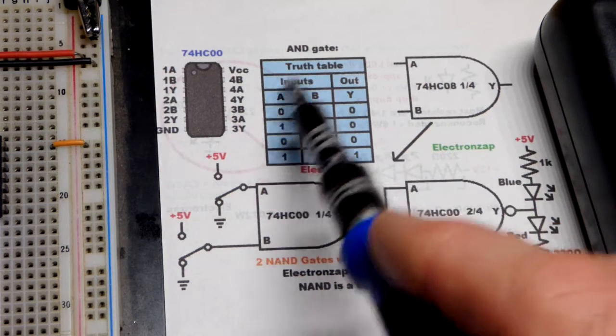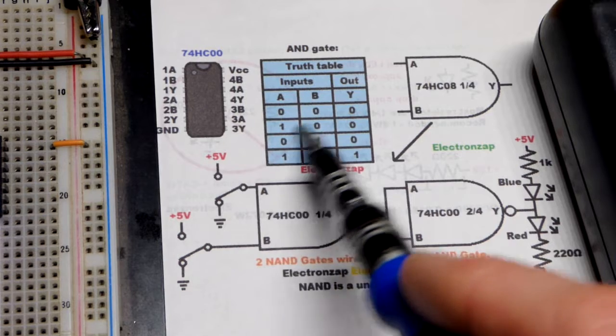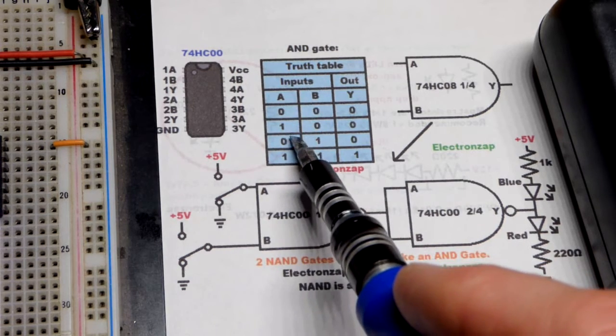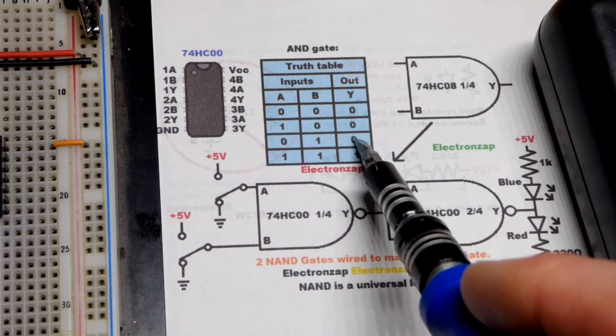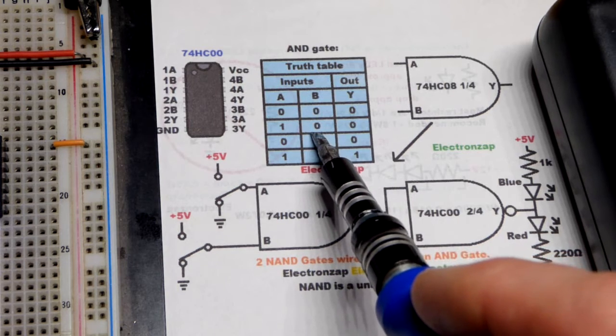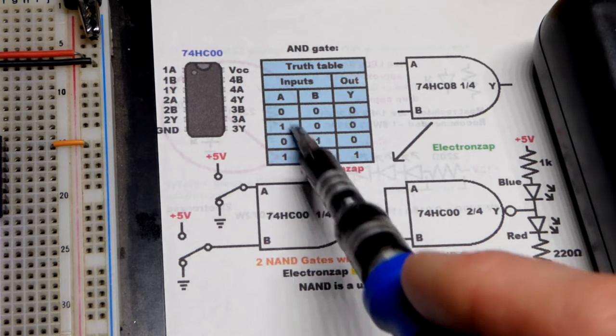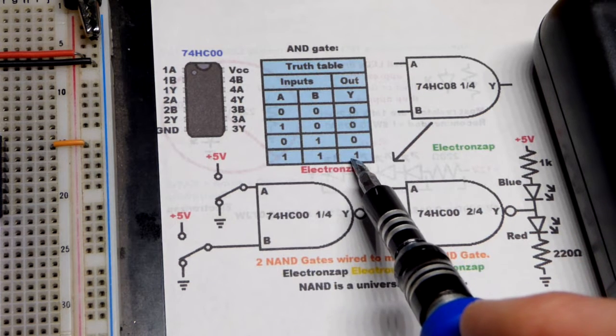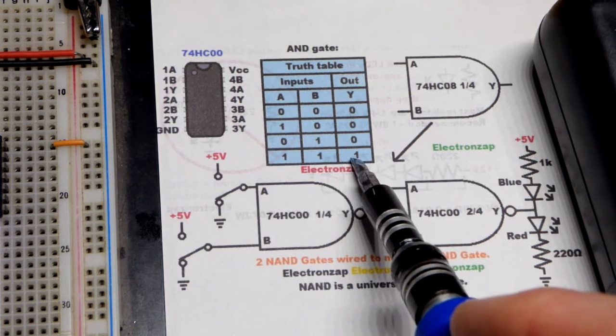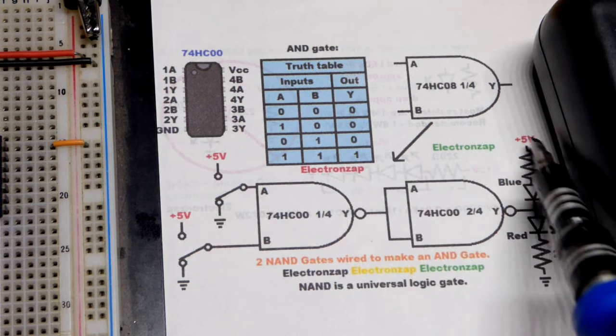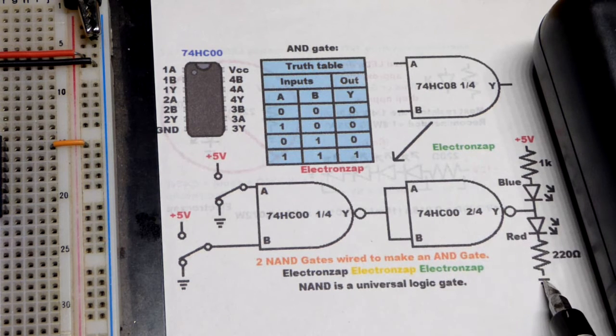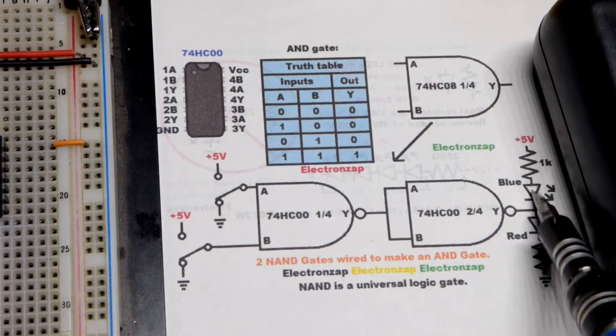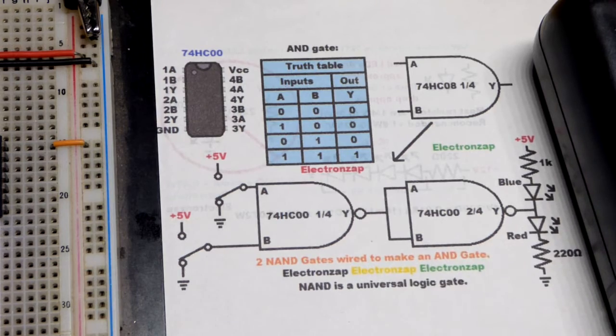And here is the AND gate truth table. If any input is low, then the output is low. Doesn't matter how many are high, in this case we only have two inputs, so it would only be one that's high or none. All inputs have to be high, in this case there's two, in order for the output to be high. So that would be when the red LED lights up. When the output is low, that is when the blue LED lights up.